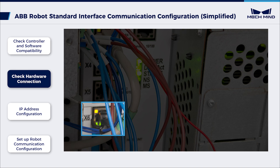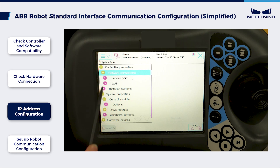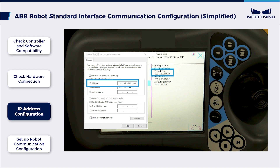Next, check the hardware connections. Make sure the IPC's Ethernet cable is plugged into the X6-WAN port of the robot controller. Then configure the IP address. Tap Network Connections on the Teach pendant and choose WAN. Ensure that the robot's and the IPC's IP addresses belong to the same subnet.